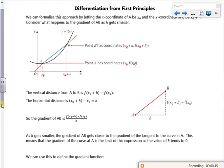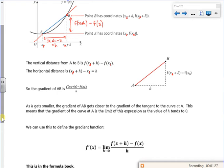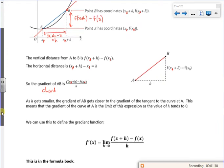So the idea is the vertical difference is f of x plus h, so the y value of B minus the y value of A, which is f of x. And then this distance across here is x plus h minus x, which is just h. So the gradient of that chord will be f of x plus h minus f of x all over h.